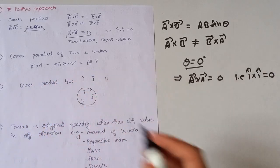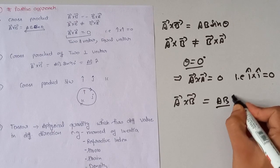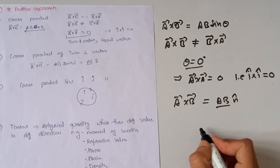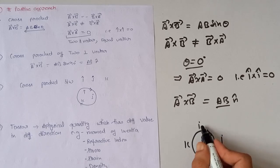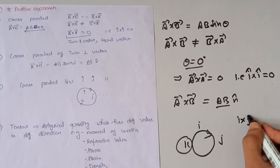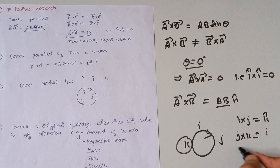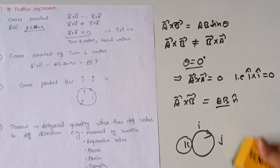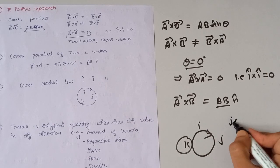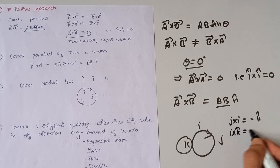The cross product of two vectors perpendicular to each other is given by a × b = ab·sinθ · n̂. For the unit vectors: i × j = k, j × k = i, and k × i = j. Moving in the anti-clockwise direction gives a positive result; in the clockwise direction: j × i = −k, and i × k = −j.